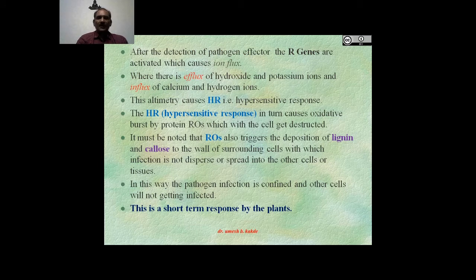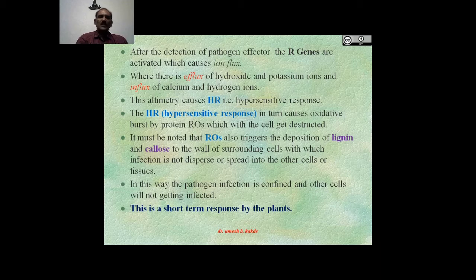After detection of the pathogen effector, the R gene is activated, which causes ion flux — efflux of hydroxide and potassium ions and influx of calcium and hydrogen ions. This ultimately causes the HR, that is hypersensitivity response. This hypersensitivity response in turn causes oxidative burst by producing ROS, with which the cell gets destructed. ROS also trigger the deposition of lignin and callose to the cell wall of surrounding cells, so that the infection is not dispersed to other cells or tissues. In this way, the pathogen infection is confined to one cell.